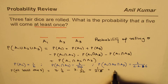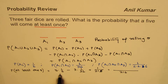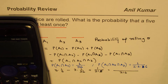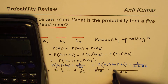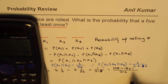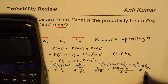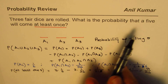Taking 216 as the common denominator: 3 × (1/6) becomes 108/216, minus 3 × (1/36) which is 18/216, plus 1/216. So we get 108 − 18 + 1 = 91. Therefore, the probability of getting at least one five is 91/216.